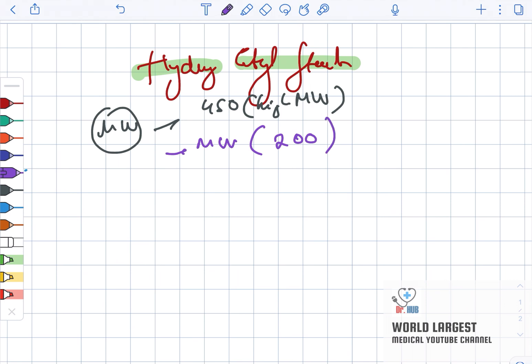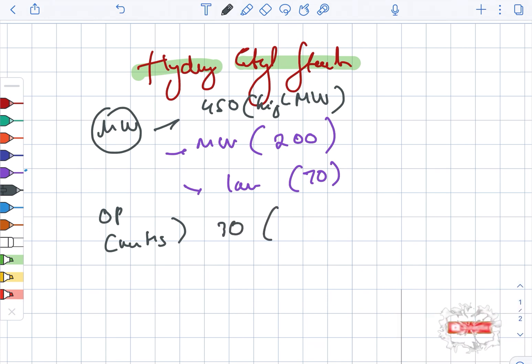And then in case of low, it is about 70. Now looking at the oncotic pressure, the units being mmHg, the oncotic pressure is around 30, and this is for the 6% heta starch.